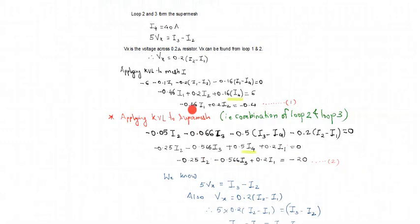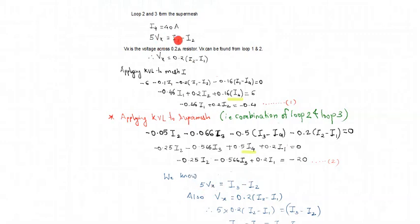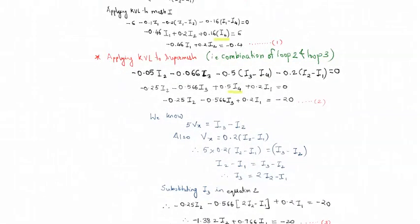We have equation one with variables i1 and i2, and equation two with three variables i1, i2, and i3. To solve simultaneously we need to reduce one variable. Using the two vx relations derived earlier — 5vx = i3 − i2 and vx = 0.2(i2 − i1) — we substitute vx and simplify to get an expression for i3.